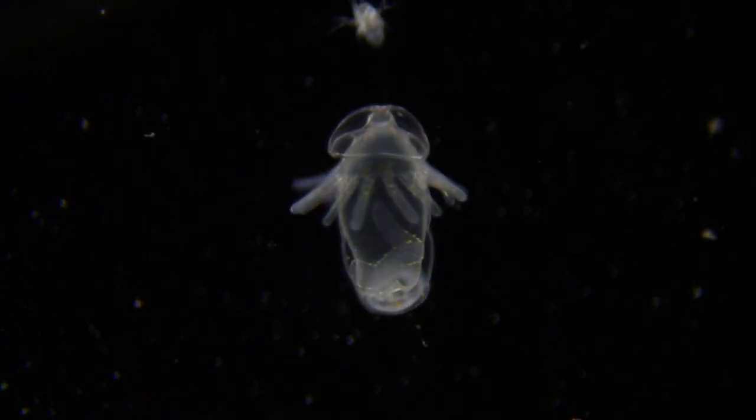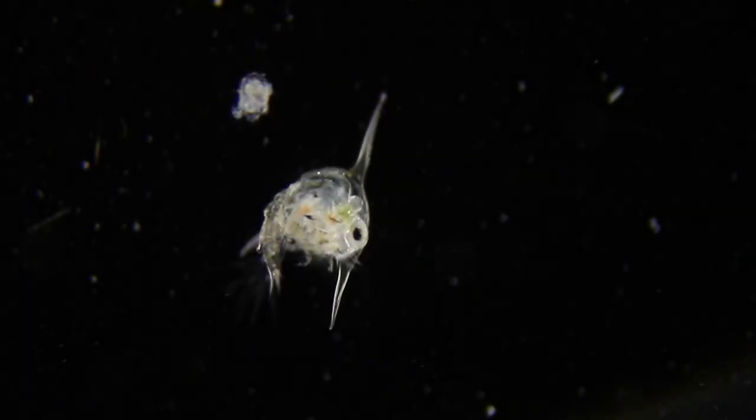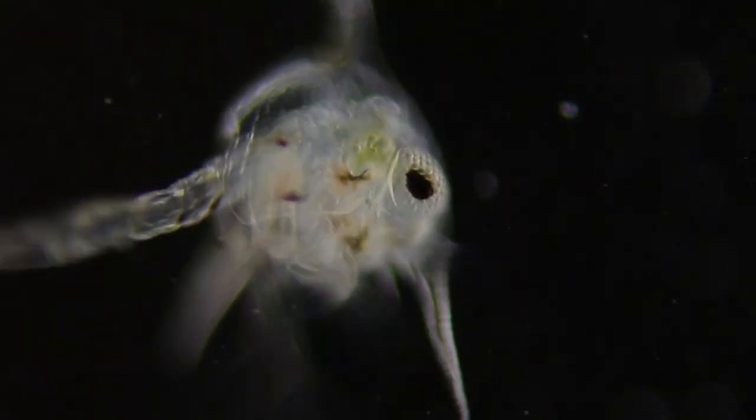Much of the zooplankton are larval organisms, like this young crab zoea. It has large, characteristic spikes on its shell.